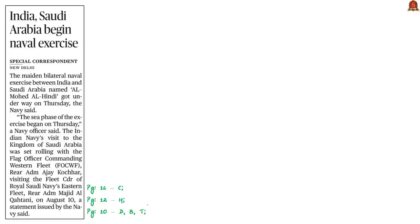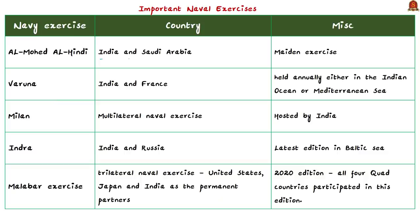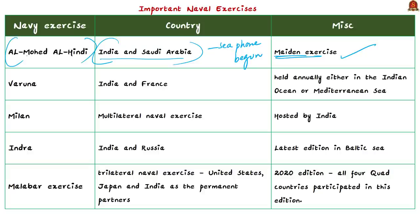The next discussion is based on a news article regarding Al-Mohed Al-Hindi. It is the first bilateral naval exercise between India and Saudi Arabia — that is why the news article calls it a maiden exercise. This naval exercise is conducted in various phases, and recently the sea phase of this exercise has begun. You have to remember: Al-Mohed Al-Hindi is the naval exercise between India and Saudi Arabia. From a prelims and international relations perspective, it is important to know other important naval exercises of India.